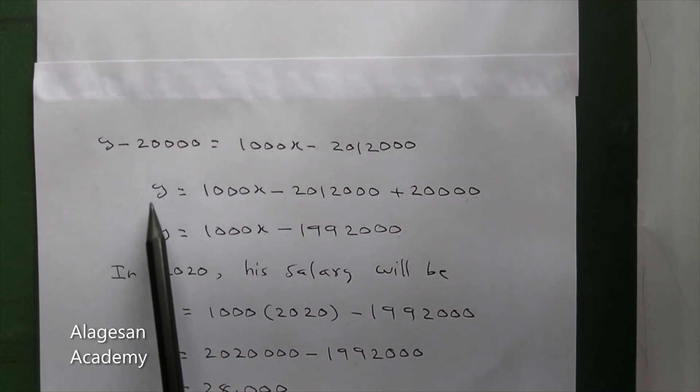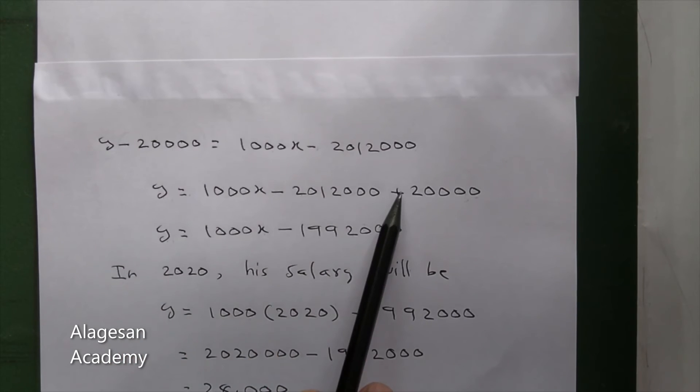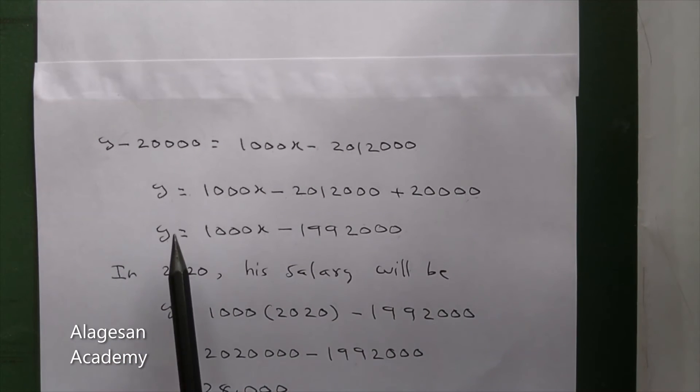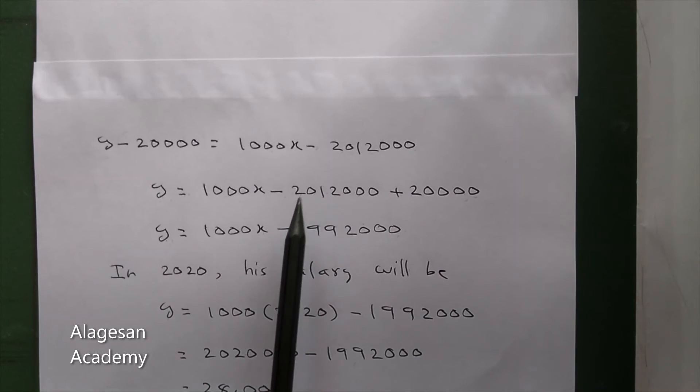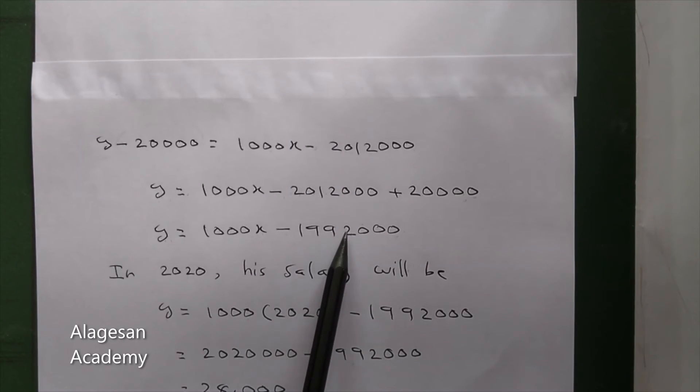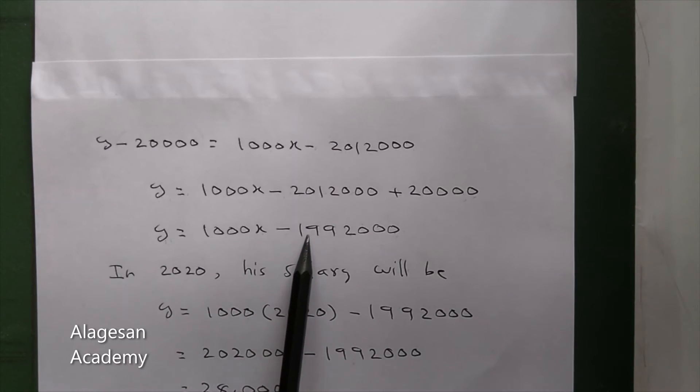y equal to this right side. In the minus 20,000 right side, plus 20,000. Next step, this minus this, we get 1992,000.